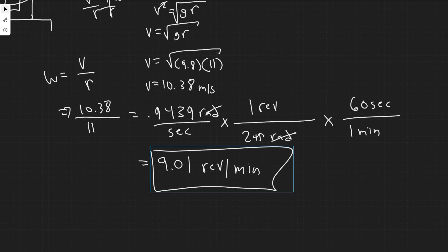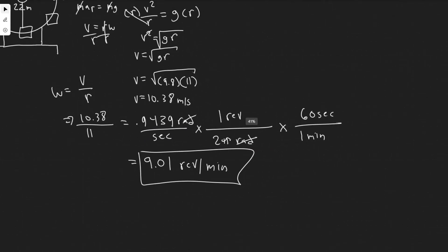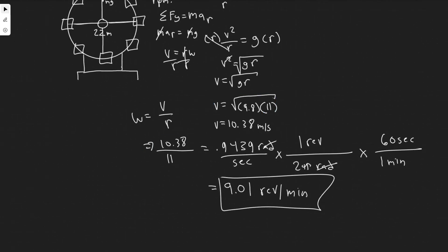So when they say how many revolutions per minute are going to be required for the passengers to feel weightless, it's this many. So 9.01 revolutions per minute, which is pretty fast.